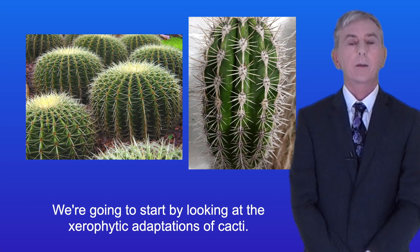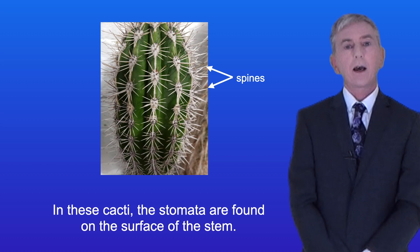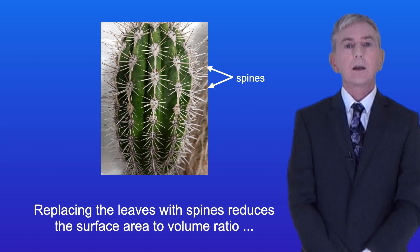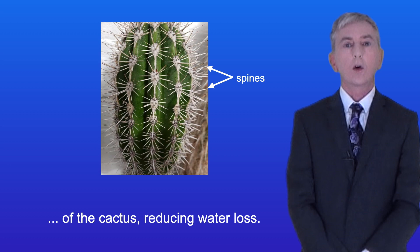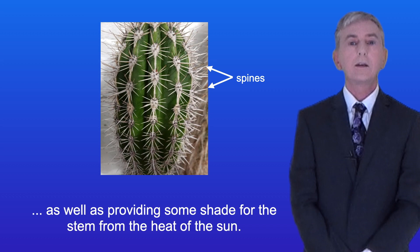We're going to start by looking at the xerophytic adaptations of cacti. In many species of cacti, leaves have been replaced with fibrous spines, with photosynthesis taking place in the stem of the cactus, where the stomata are also found. Replacing the leaves with spines reduces the surface area to volume ratio of the cactus, reducing water loss. The spines also trap moist air near the cactus, reducing the rate of transpiration, as well as providing some shade for the stem from the heat of the sun.